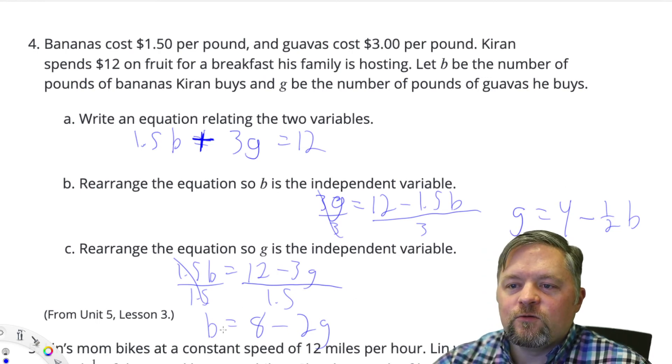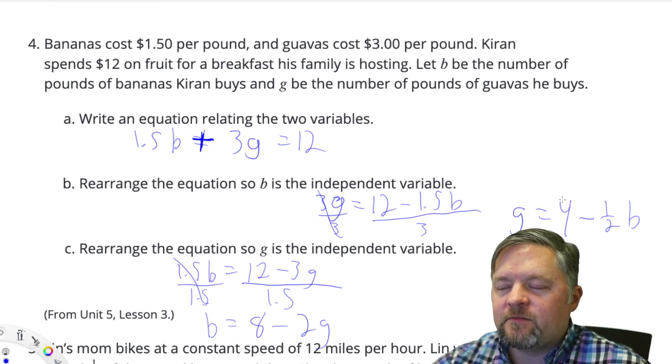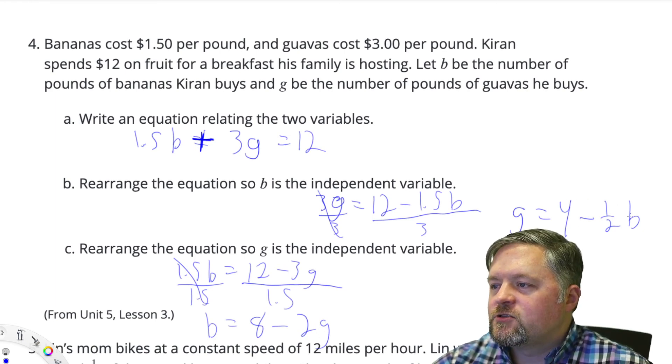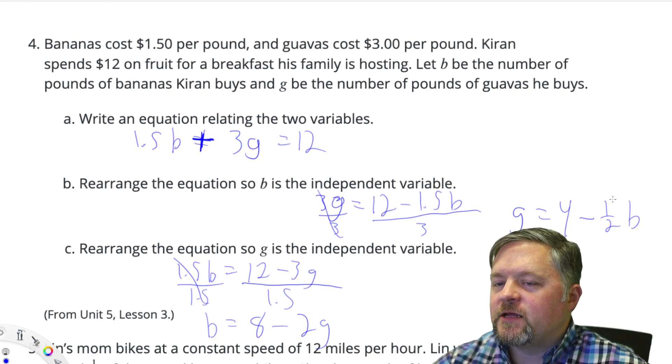Excellent. B equals 8 minus 2g. So we solved it so that g is independent - b depends on g - and we solved it so that b is independent - g depends on b.